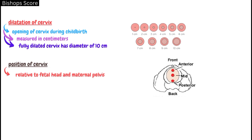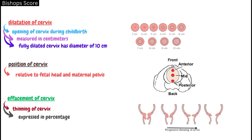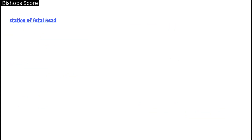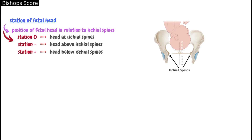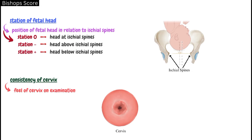The second is the position of the cervix, which refers to the position of the cervix relative to the fetal head and maternal pelvis. The third is the effacement or thinning of the cervix, expressed as a percentage. The fourth parameter is the station of the fetal head, which is the position of the fetal head relative to the ischial spines of the maternal pelvis. Station is zero when the head is at the level of the ischial spines; it is negative above and positive below the ischial spines. The fifth is the consistency of the cervix — a firm cervix has a consistency similar to the tip of the nose, while a soft cervix has the consistency similar to the lips of the oral cavity.